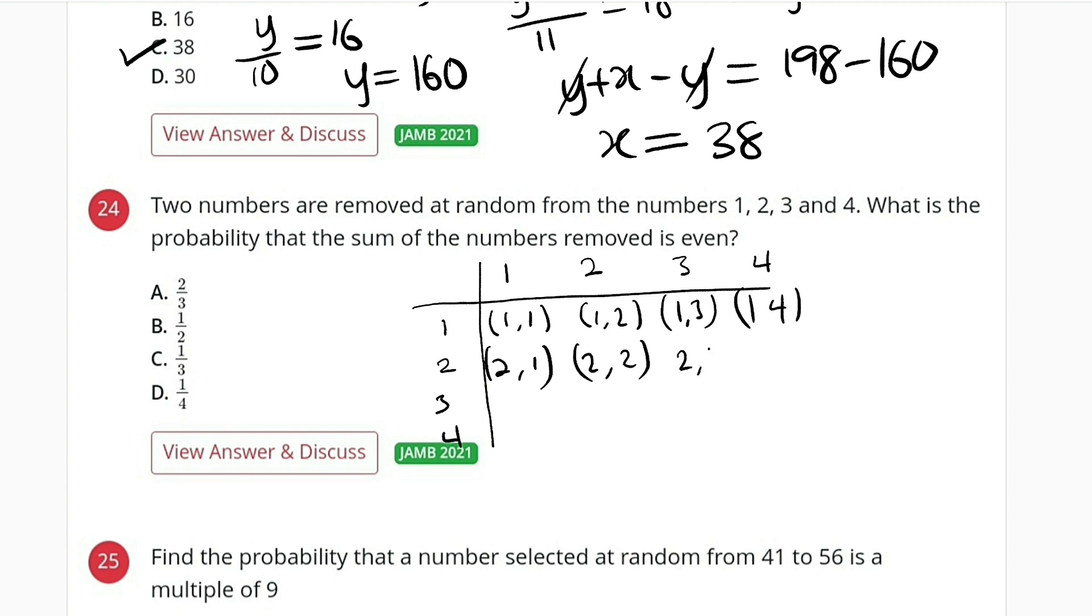Secondly, we have 2 and 1, 2 and 2, 2 and 3, 2 and 4. 3 and 1, 3 and 2, 3 and 3, 3 and 4. And lastly, 4 and 1, 4 and 2, 4 and 3, 4 and 4.